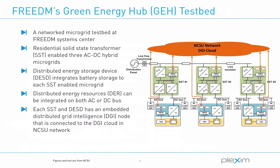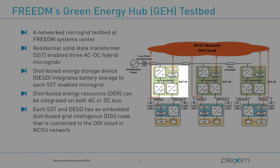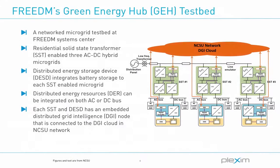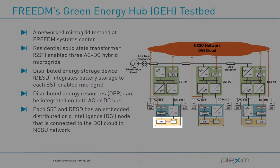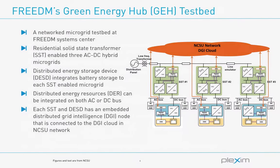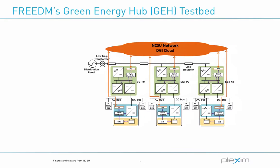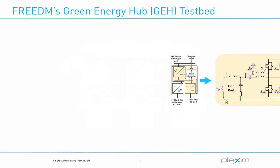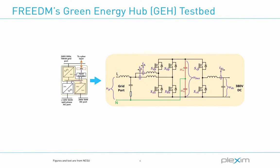The Green Energy Hub setup is organized into nodes, each of which includes an SST, a house or industrial load, photovoltaic generation, and a stationary battery or a plug-in hybrid electric vehicle. This is the part of the SST, the controller for which was validated in Plex.